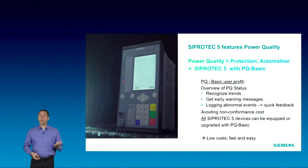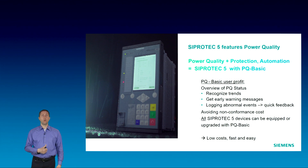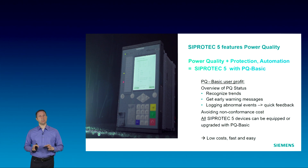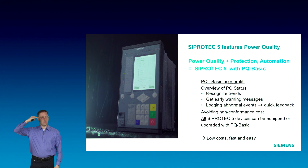This innovation is clear: power quality plus protection and automation — that is SIPROTEC 5 with PQBASIC. It offers you benefits like getting an overview and recognizing trends of the PQ status of your system. You are warned at sensitive areas or critical infrastructures if some PQ values exceed a predefined threshold.